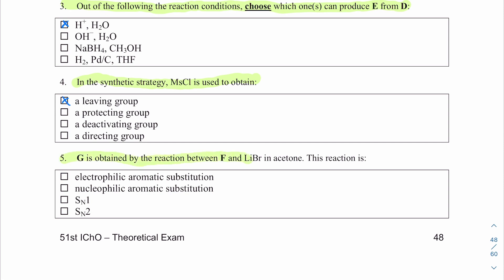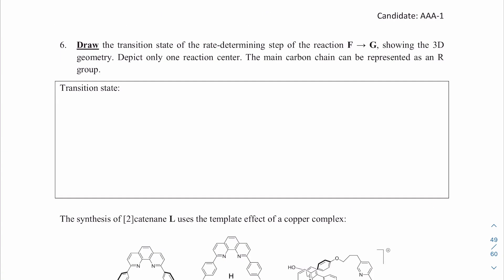Question five: G is obtained by the reaction between F and lithium bromide in acetone. This reaction is an SN2 — a nucleophilic substitution involving two species. It's not electrophilic aromatic substitution, not nucleophilic aromatic substitution, and not SN1. So SN2 is the only correct option.